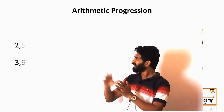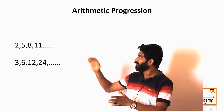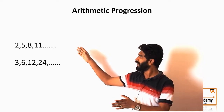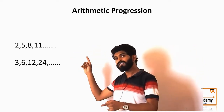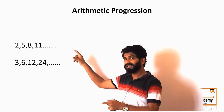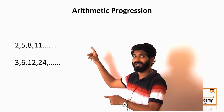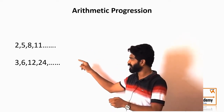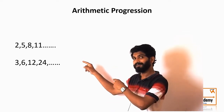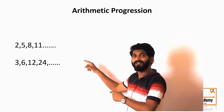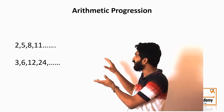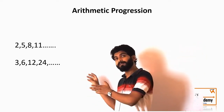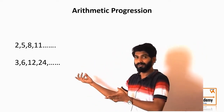Hi, so today let us understand what is Arithmetic Progression. Consider these two sequences. The first sequence is 2, 5, 8, 11 and so on — can you guess the next number? You can follow the sequence and guess that the next number should be 14. Now let's look at the second sequence: 3, 6, 12, 24 — the next number should be 48. You can follow the sequence, identify the rule it is based on, and then identify the next number.